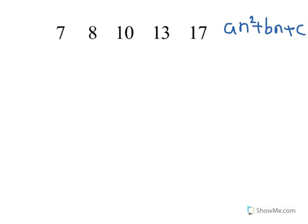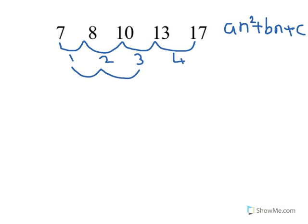The first thing we've got to look at is the difference between each term in the sequence. As we can see in this one, this goes up 1, then it goes up 2, then it's add 3, then it's add 4. This is changing each time. What we need to find is when this change will become the same, so we look at the second difference.